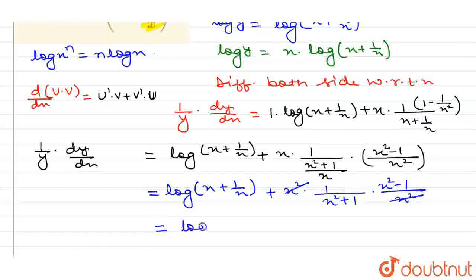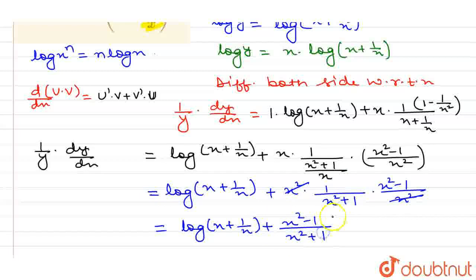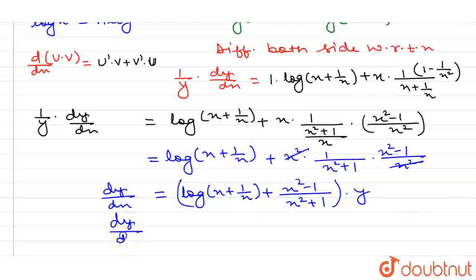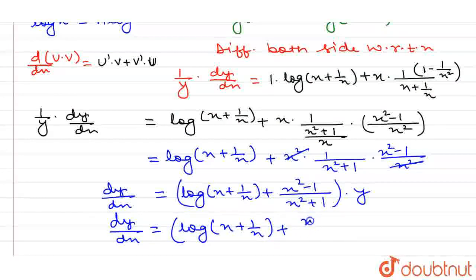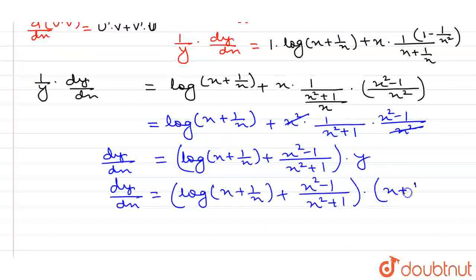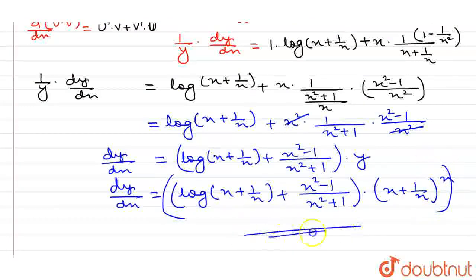So the remaining part is log(x + 1/x) + (x² − 1)/(x² + 1). Since y is on the left in division, it moves to multiplication on the right. So the final value of dy/dx equals [log(x + 1/x) + (x² − 1)/(x² + 1)] · (x + 1/x)^x. This is the answer to the given question. Thank you.